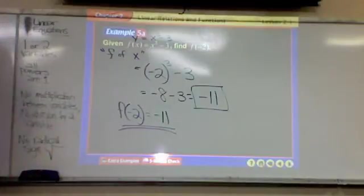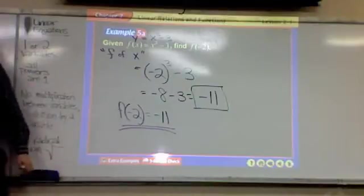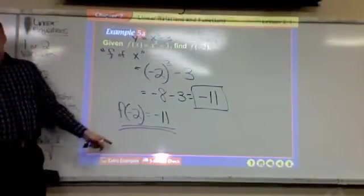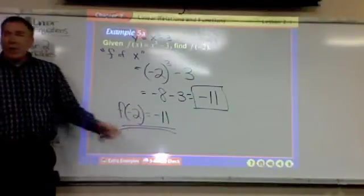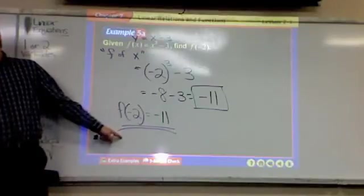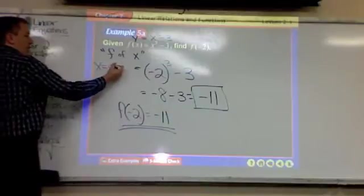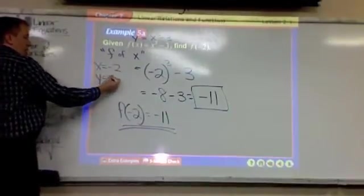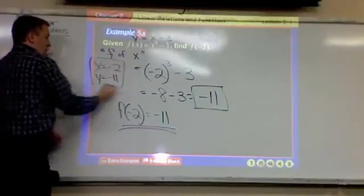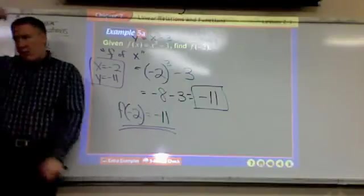F of negative 2 equals negative 11, right there. What's my x coordinate? X coordinate is what x was, right? Negative 2. What's my y coordinate? In one statement, I have both coordinates. Good? This is a point. Before, I would have to write x equals negative 2 and y equals negative 11, and they're separate statements, and I somehow have to sort of be like, if these are together, this is one statement that puts them together. X negative 2, y negative 11.